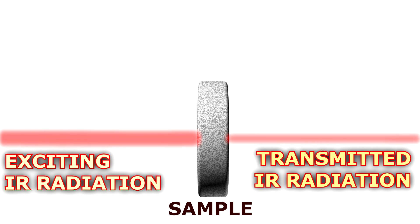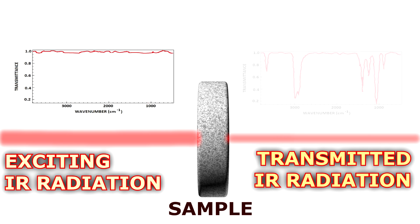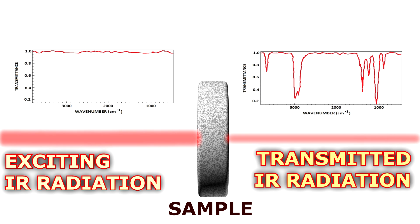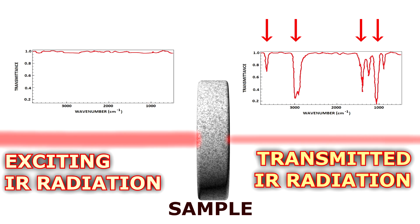In a real measurement, it means that when we compare the spectra of the exciting radiation and the transmitted radiation, we see that in the case of the radiation that has passed through the substrate, the intensity at certain wavelengths or wavenumbers has significantly dropped. That's because at those wavelengths, the radiation was absorbed, causing a specific vibration.